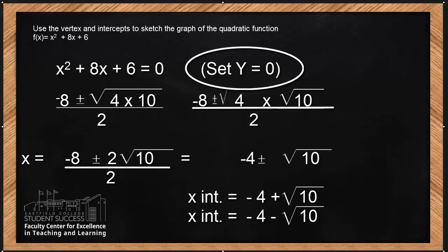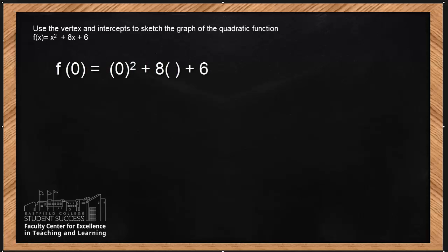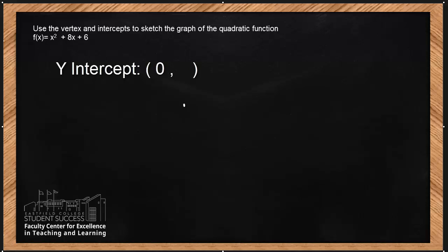The x-intercepts are not the only intercepts. Now let's find the y-intercepts. To find the y-intercepts, we let our x equal to zero — that means we're looking for f of zero. Going back to our function, we're going to substitute zero for x. So now we have f of zero equals zero squared plus 8 times zero plus 6. Once we simplify, we found our y-coordinate to be 6. So the y-intercept is (0, 6).